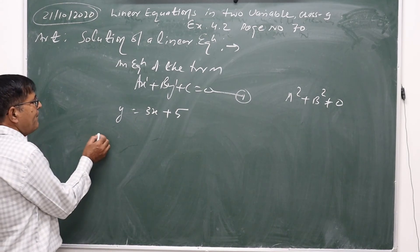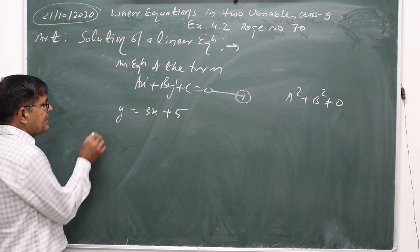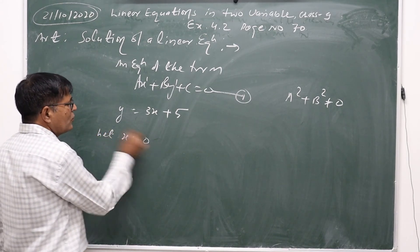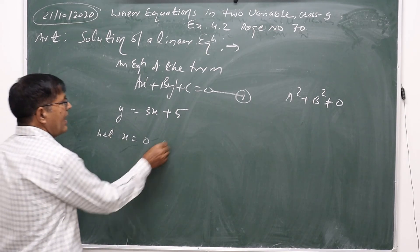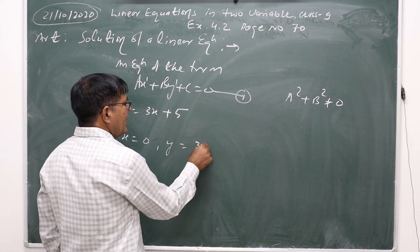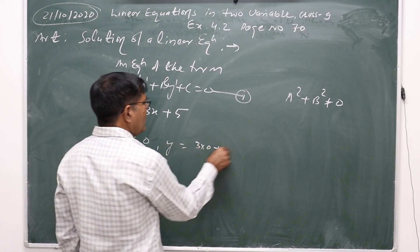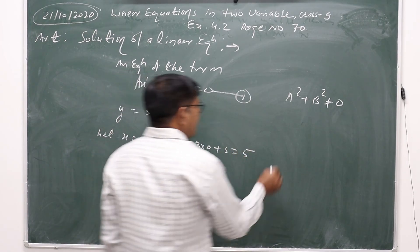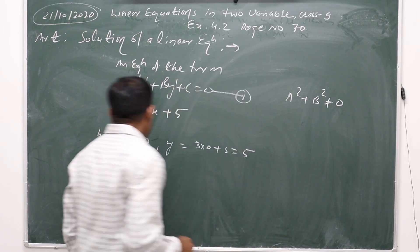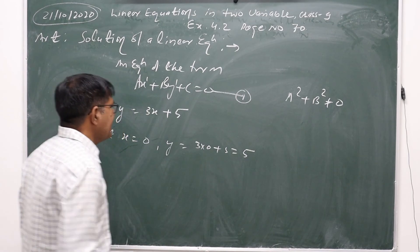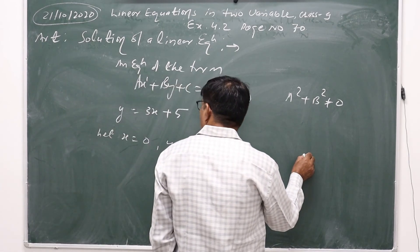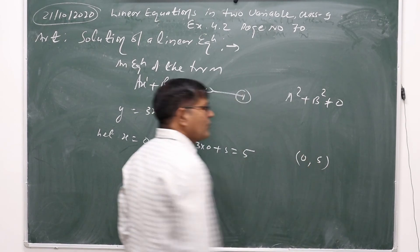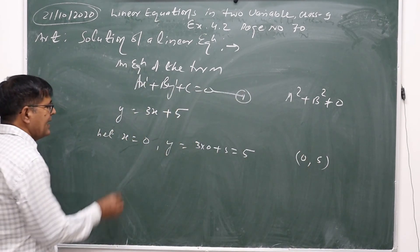By simple inspection, let x equal 0. Then y will equal 3 into 0 plus 5, which equals 5. That is, the solution set is (0, 5) — when x is 0, then y is 5. So this is one solution set.